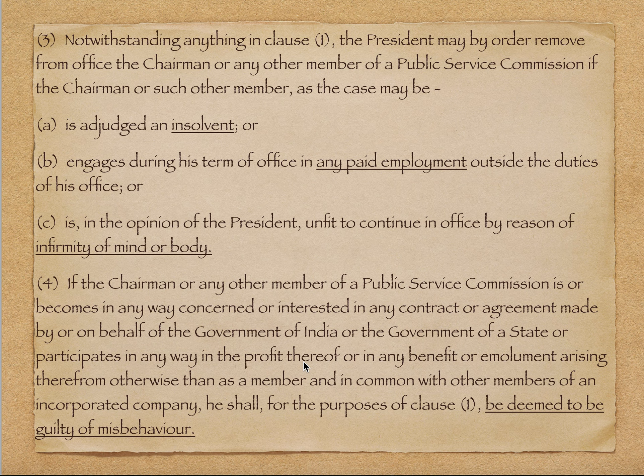Clause 4 की language कहती है कि अगर कोई Chairman या Member किसी ऐसी company में लगा हो जिसके साथ Government of India ने contract करा हो — for example अगर UPSC का chairman का Reliance के साथ कोई partnership है और Government का भी Reliance के साथ contract है — तो वो Member उस contract का beneficiary हो सकता है। तो President उसे misbehavior consider करेगा और Clause 1 के तहत निकाल देगा।